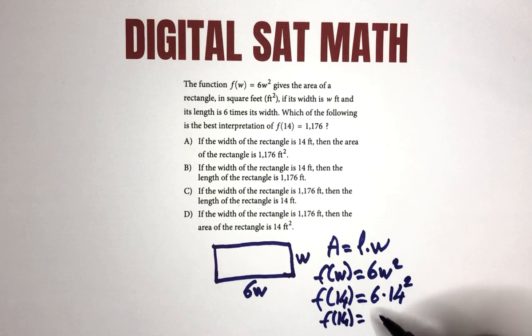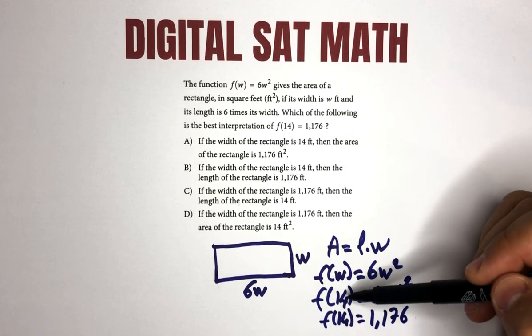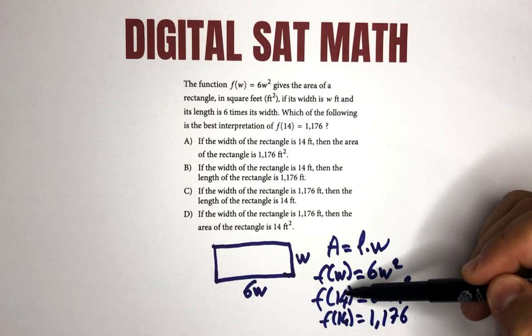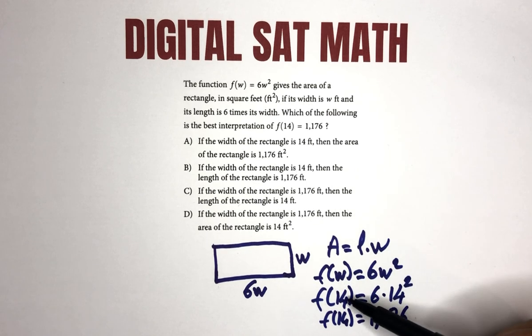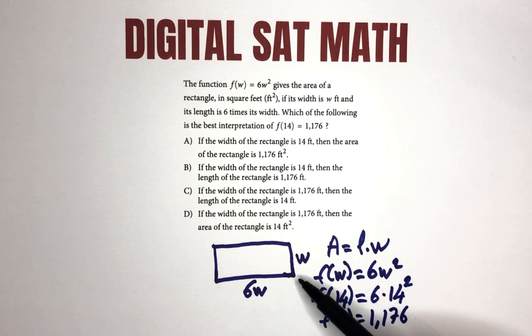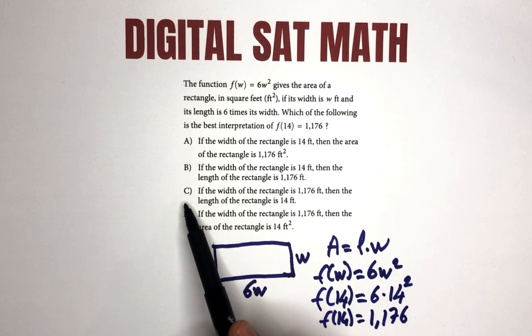So f(14), as it was indicated in the question. So where does this 14 go into the function? For the function, for the w. So 14 is for the w. W represents in our rectangle the width.